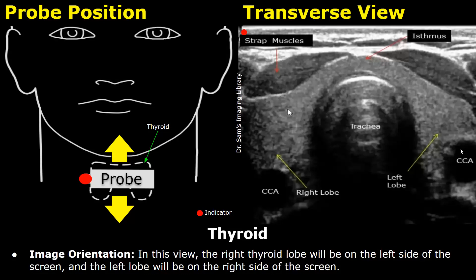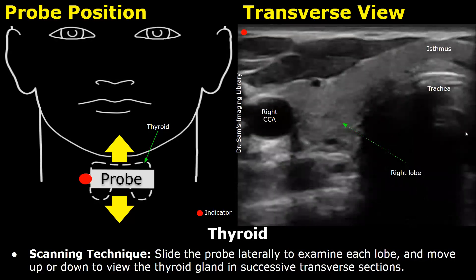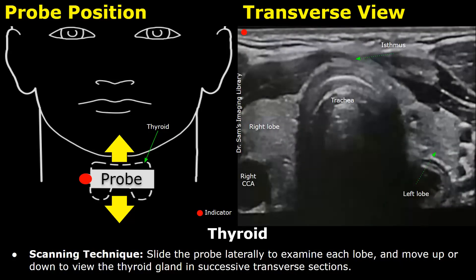These two anechoic round structures are the common carotid arteries. Slide the probe laterally to examine each lobe and move up or down to view the thyroid gland in successive transverse sections. It is important to move the probe up and down to completely scan the thyroid gland and to evaluate each lobe individually.